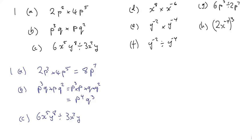Part C: 6x to the power of 5, y to the 8, divided by 3x squared y. We can do 6 divided by 3, which is 2. Then x to the power of 5 divided by x squared — subtract the indices — 5 take away 2 is 3, so x cubed. And y to the power of 8 divided by y to the power of 1 — subtract 1 from 8 — gives 7. So the answer is 2x cubed y to the 7.